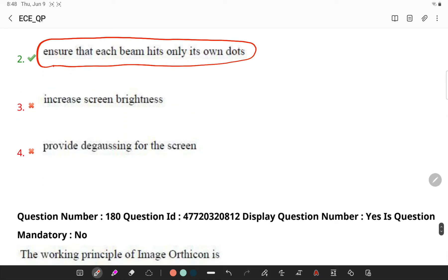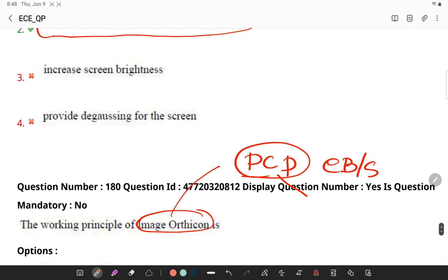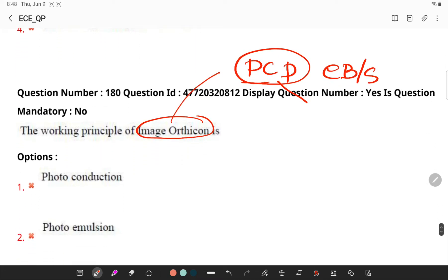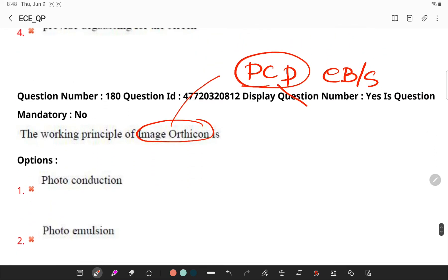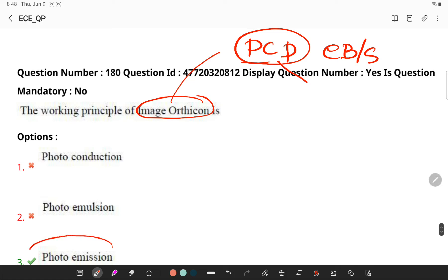What is the working principle of image orthicon? This has been a standard question. The operation of the camera tube is based on the photoconductive properties of certain materials and on electron beam scanning. This is also used in Videocon. So if you see here, it works on the principle of photo emission.